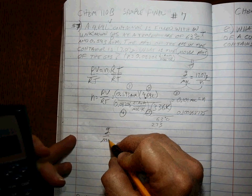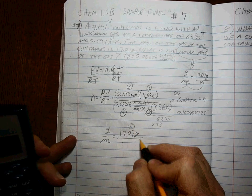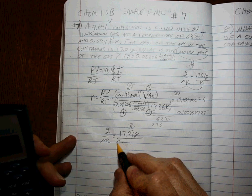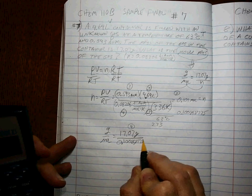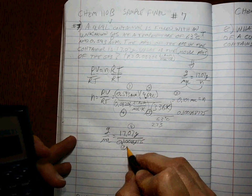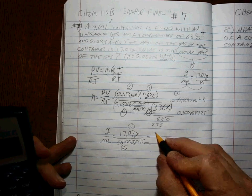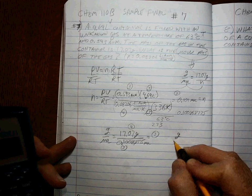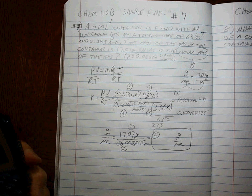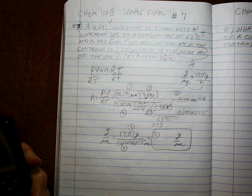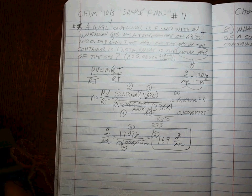So the grams per mole is equal to 17.07 grams, four sig figs, divided by 0.10086 to three sig figs moles, nothing cancels, you don't want anything to cancel, and to three sig figs, final answer, grams per mole. That is 169.